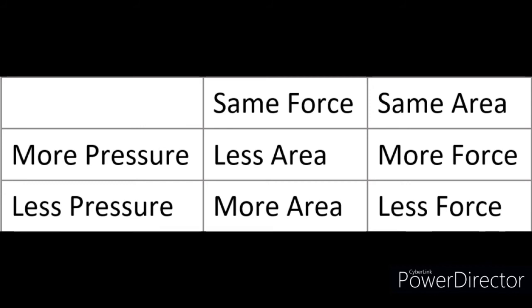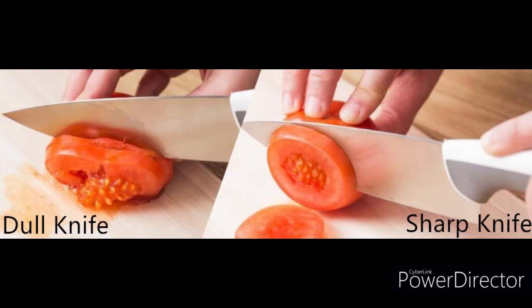We can actually see this in everyday life. For example, when we look at the difference between blunt and sharp knives, blunt knives cut through things less easily than sharper knives, and that's because they exert less pressure on whatever you're trying to cut with them because they have a larger amount of area.